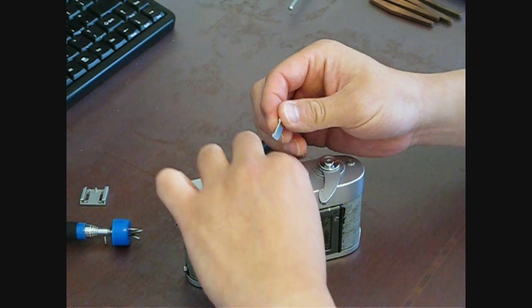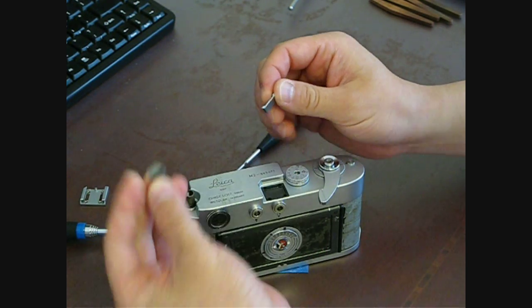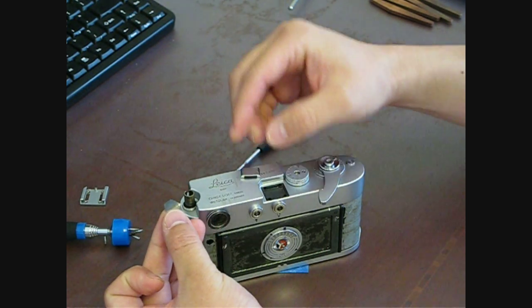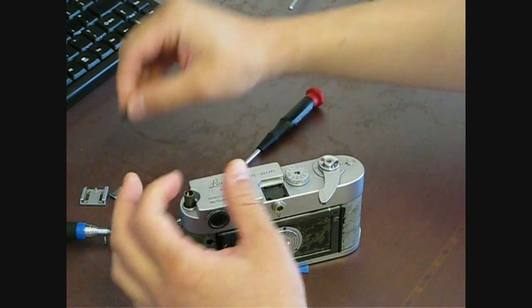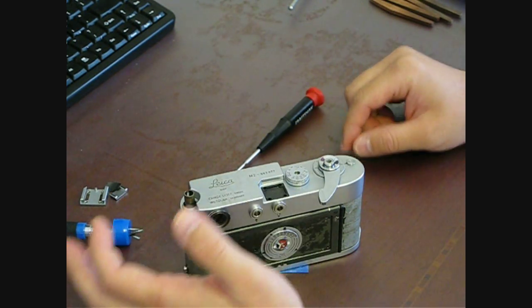And you'll see a little spring in there, a metal spring, with your cold shoe contact. Alright.